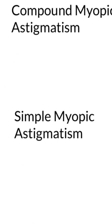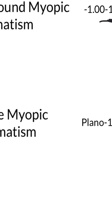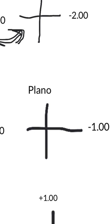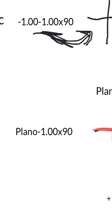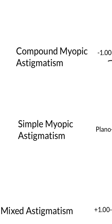The next type is called simple myopic astigmatism. Here is an example prescription, and if you convert it to an optical cross, you can see the vertical axis is plano, meaning it has no prescription, and the horizontal axis has a prescription of minus one — a myopic prescription. That's why it's called simple myopic astigmatism.